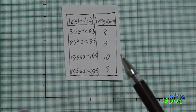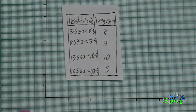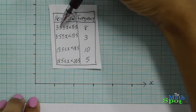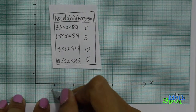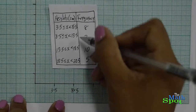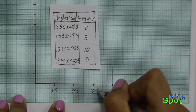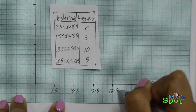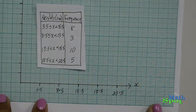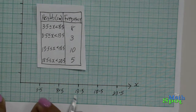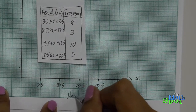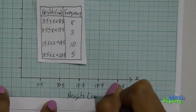Keep in mind that we're using the class boundaries when labeling the x-axis. We have here 3.5 — so we record that — then 8.5, 13.5, 18.5, and 23.5. This x-axis represents the variable heights in centimeters.